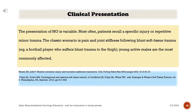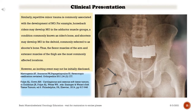The presentation of myositis ossificans is variable. Most often, patients recall a specific injury or repetitive minor trauma. The classic scenario is pain and joint stiffness following blunt soft tissue trauma — e.g., a football player who suffers blunt trauma to the thigh. Young active males are the most commonly affected. Repetitive minor trauma is also commonly associated; for example, horseback riders may develop myositis ossificans in the adductor muscle groups (rider's bone), and shooters may develop it in the deltoid (shooter's bone). Thus, the flexor muscles of the arm and extensor muscles of the thigh are the most commonly affected locations.